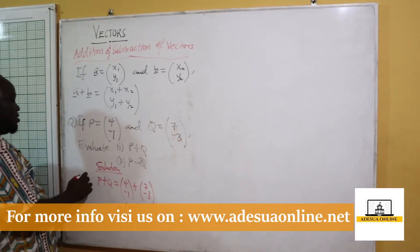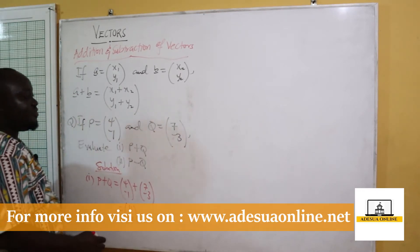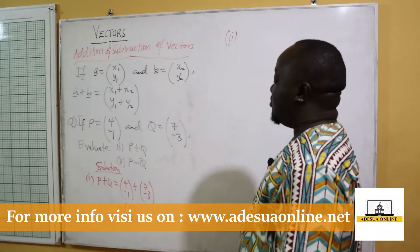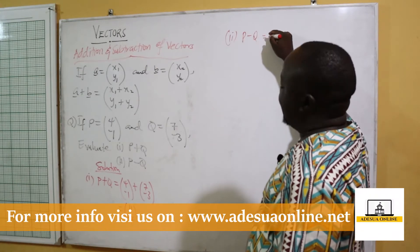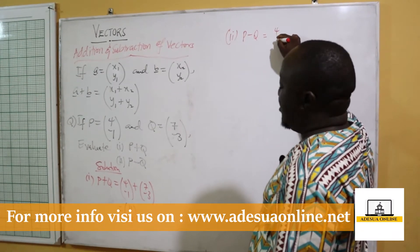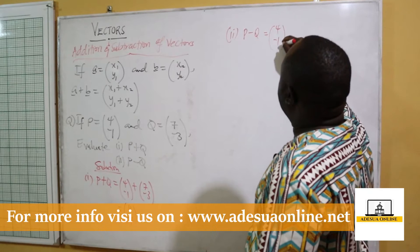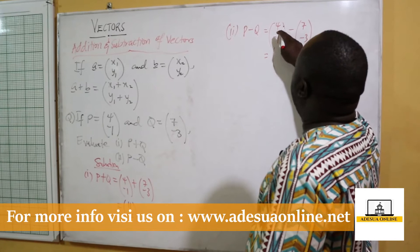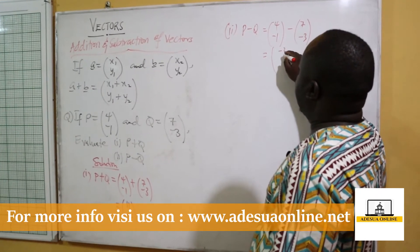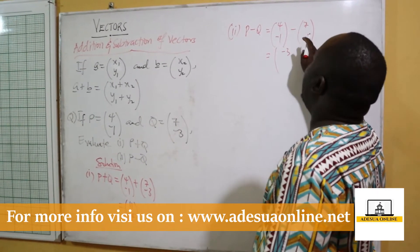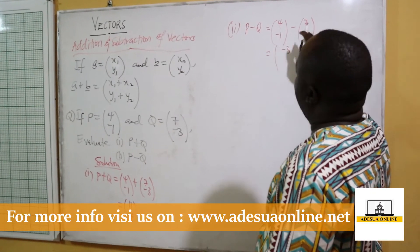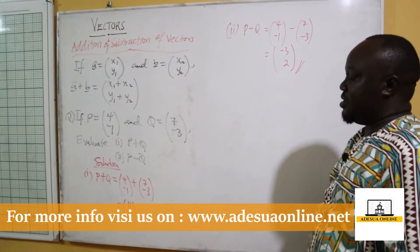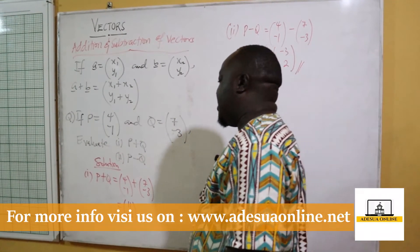So p plus q equals (11, -4). For part ii, p minus q is (4, -1) minus (7, -3), which gives 4 minus 7 equals negative 3, and negative 1 minus negative 3 equals negative 1 plus 3 equals 2. So p minus q equals (-3, 2).